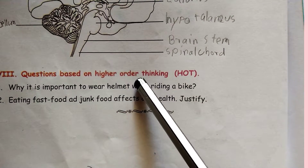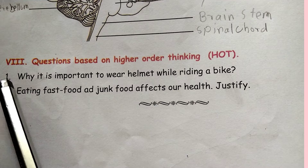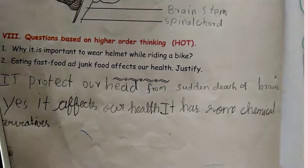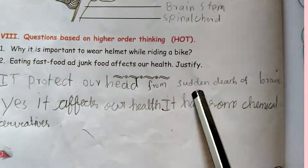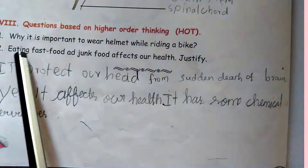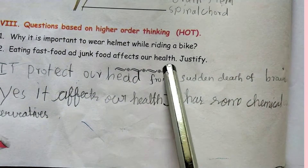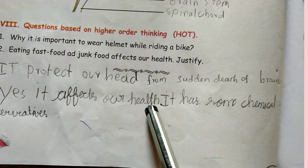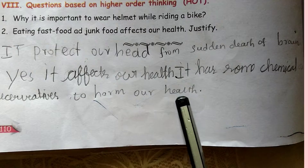Questions based on higher order thinking. Why is it important to wear a helmet while riding a bike? It protects our head from sudden injury to the brain. Does eating fast food and junk food affect our health? Yes, it affects our health because it contains chemical preservatives that harm our health.